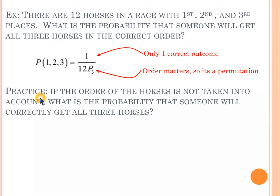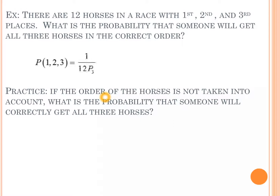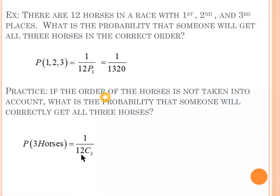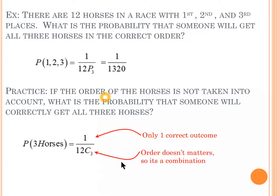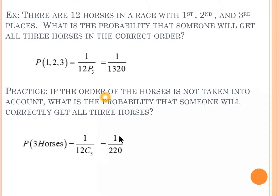For the second question: if the order of the horses is not taken into account, what is the probability of correctly getting all three horses? Since order doesn't matter, we use a combination. The probability is 1 divided by 12 choose 3. We still have only one correct outcome, but now the total outcomes are 12 choose 3, giving a final answer of 1 over 220.